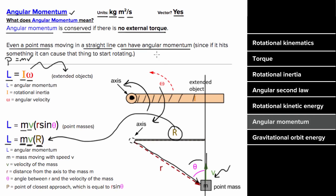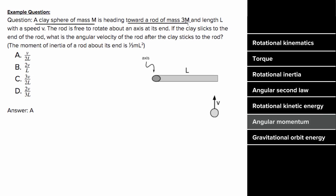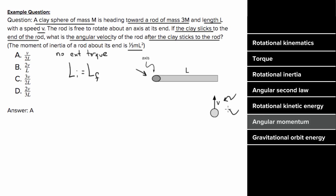Example: a clay sphere of mass M heads toward a rod of mass 3M and length L with speed V. The rod is free to rotate about an axis at one end; the clay sticks to the far end. What is the angular velocity after the collision? Since there is no net external torque, angular momentum is conserved. Initially only the clay has angular momentum: L_i = M·V·L (the clay's closest approach to the axis equals L). This equals the final angular momentum I·ω.